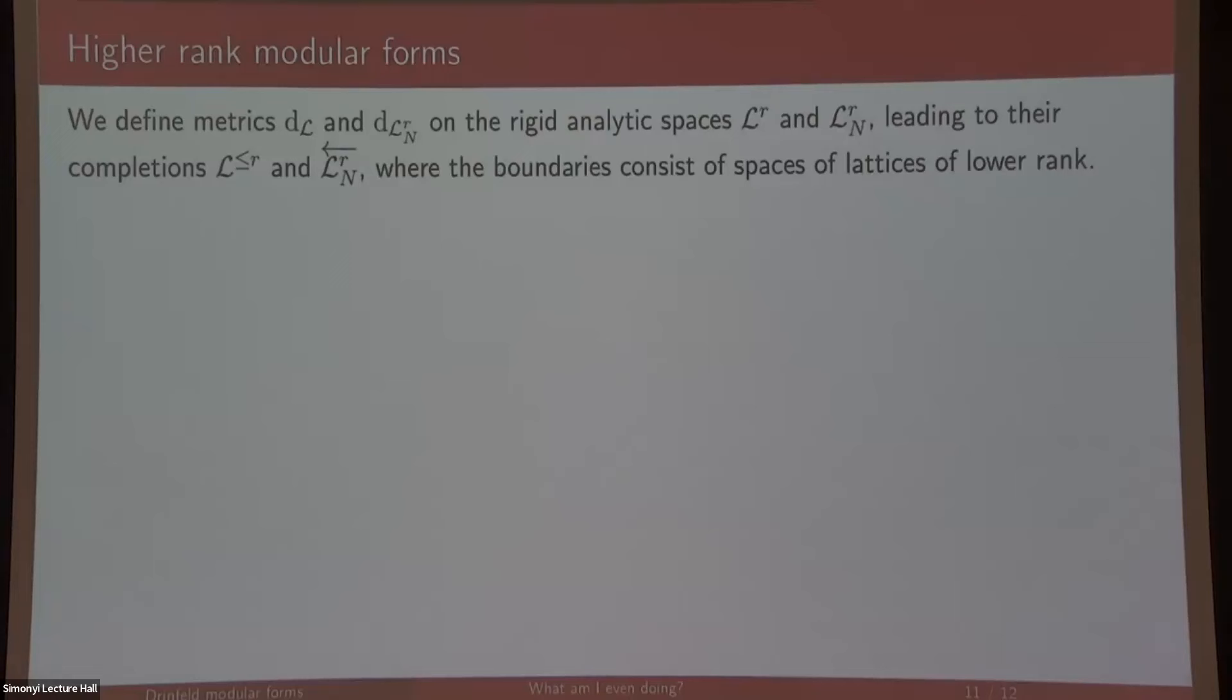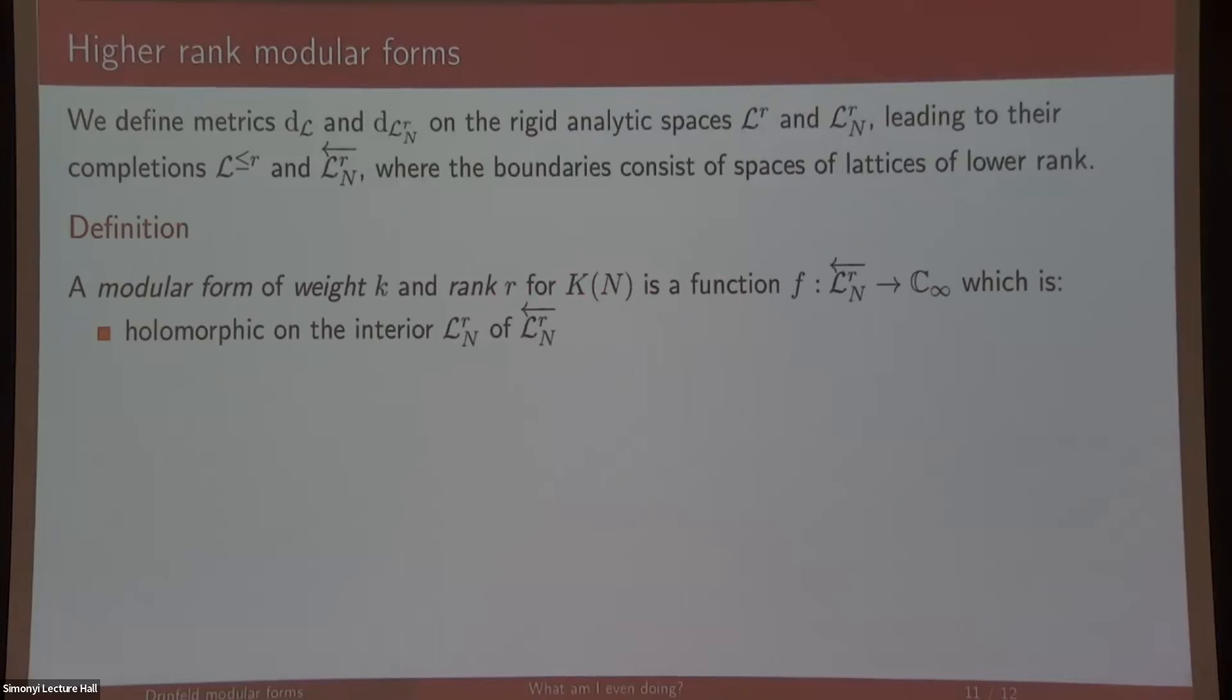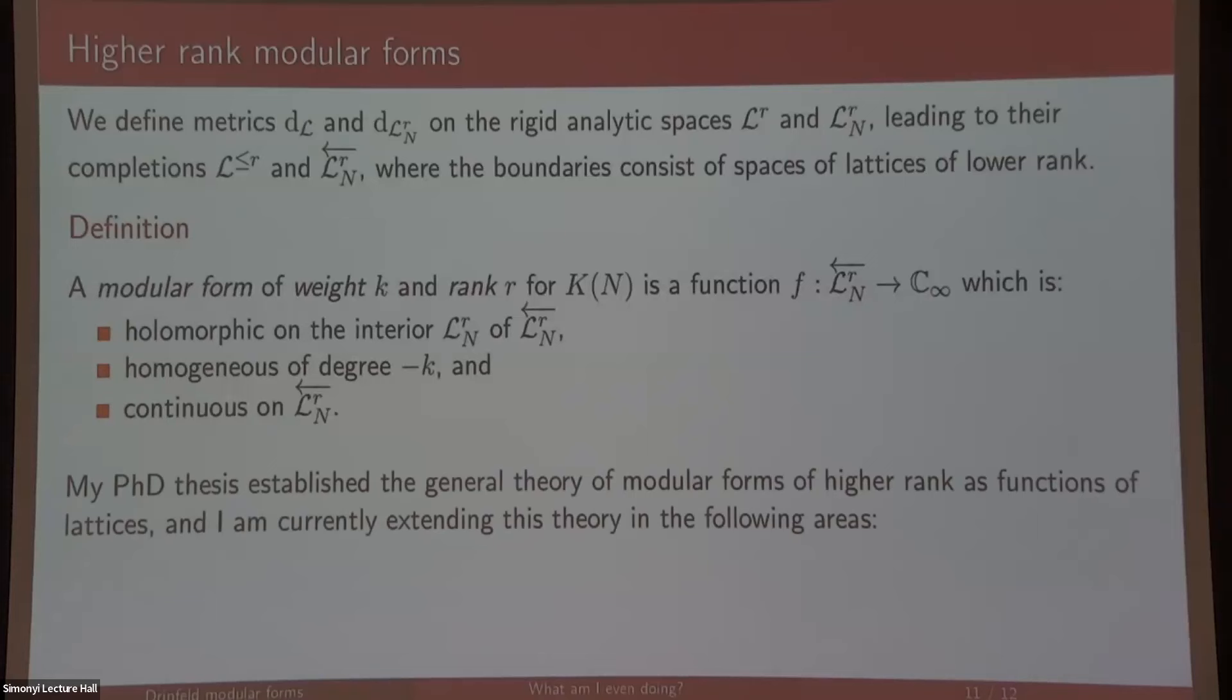I'm not writing down exactly what the metric is, but once you complete it, suffice to say the boundary consists of these same spaces of lattices with level structure but with lower rank. If you have the space of rank three, the boundary will consist of spaces of rank two and rank one. So we can define what a modular form of weight k and rank r is. It's holomorphic on the interior of the space of lattices of rank r, it's homogeneous of degree negative k, and it has to be continuous on the completed space, which basically means continuous at the boundary. As you go from a lattice of rank r and one of your generating elements goes to infinity, the way the metric is defined, the limit is then the lattice of rank r minus one made by the other generators. That's how I defined modular forms of higher rank.